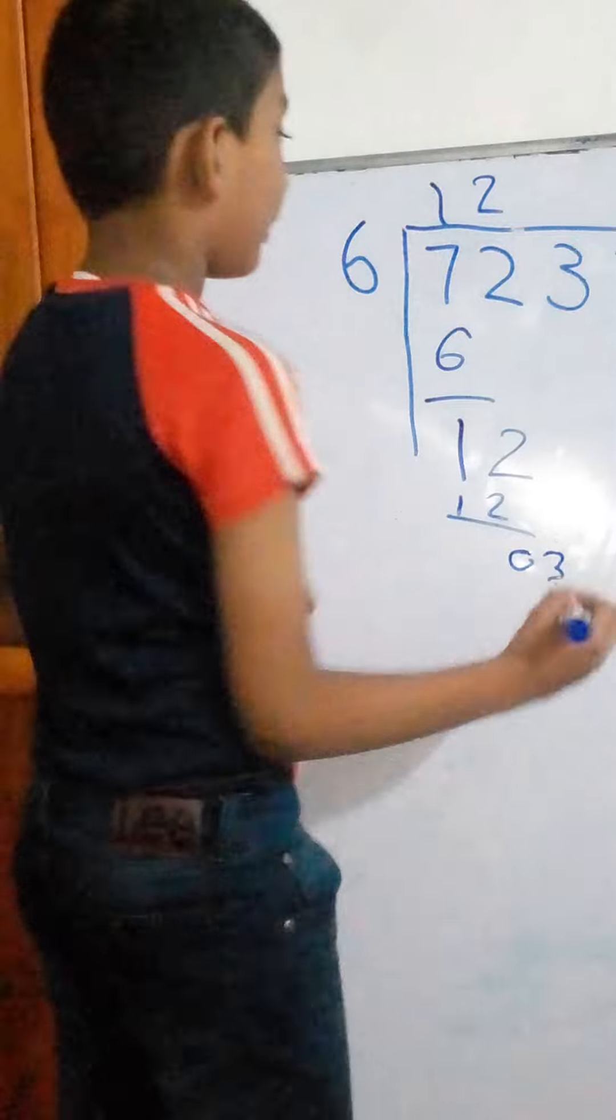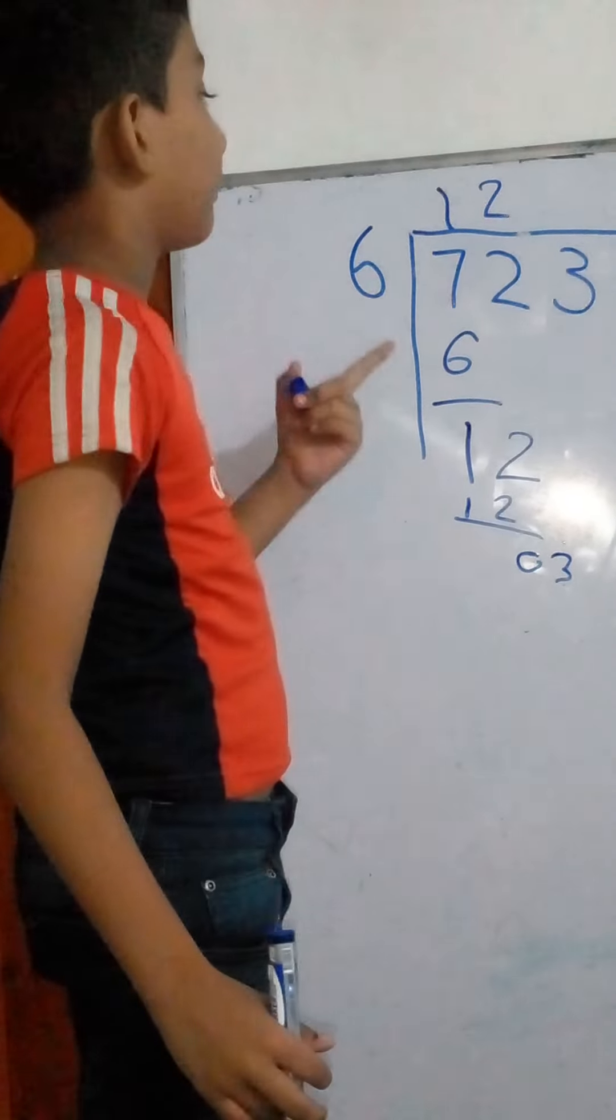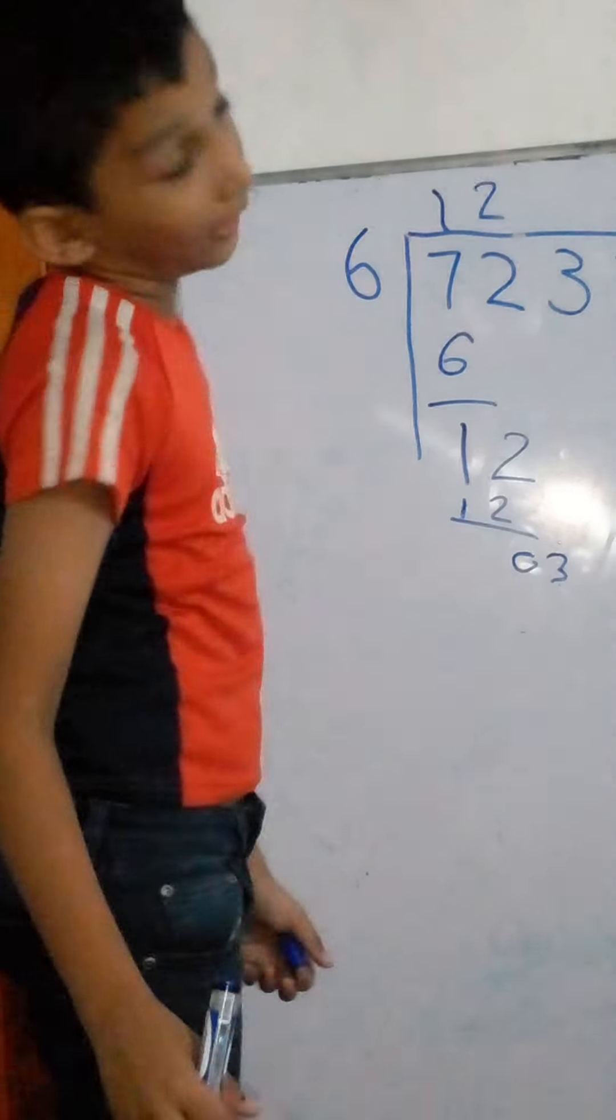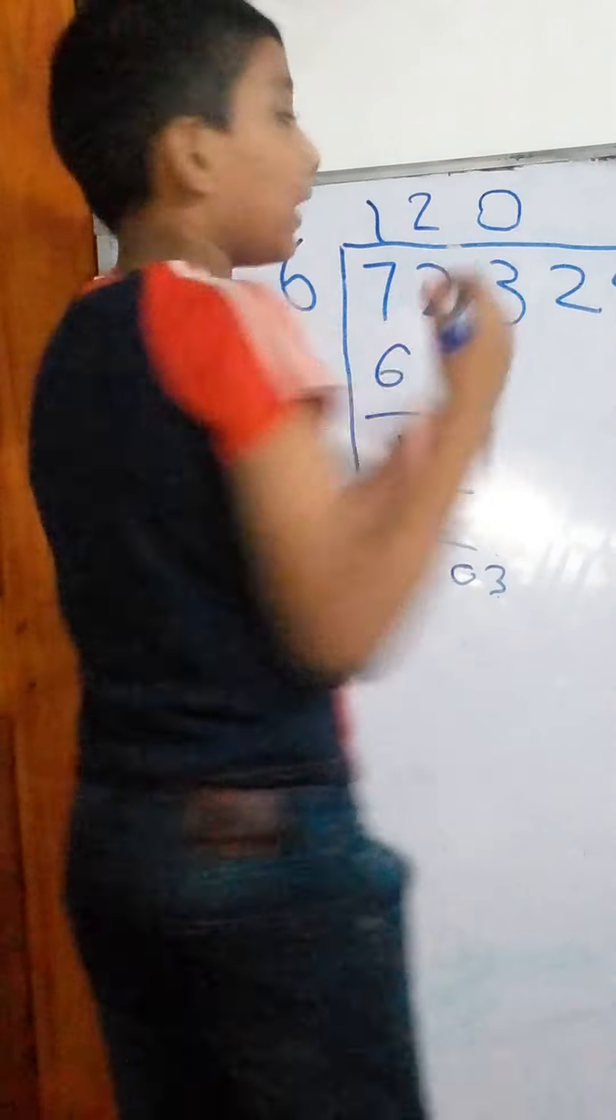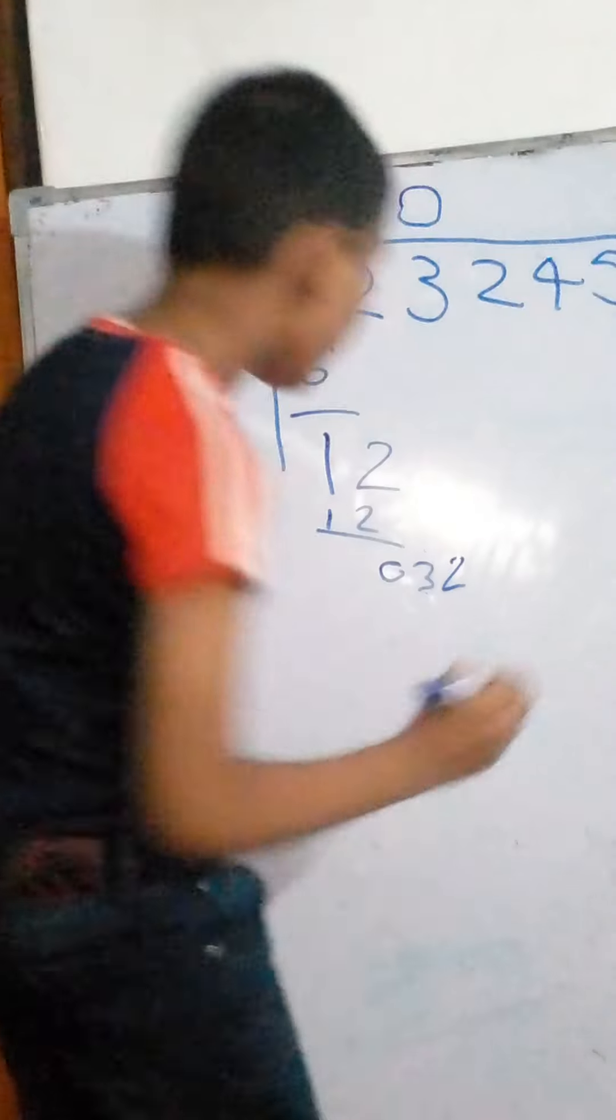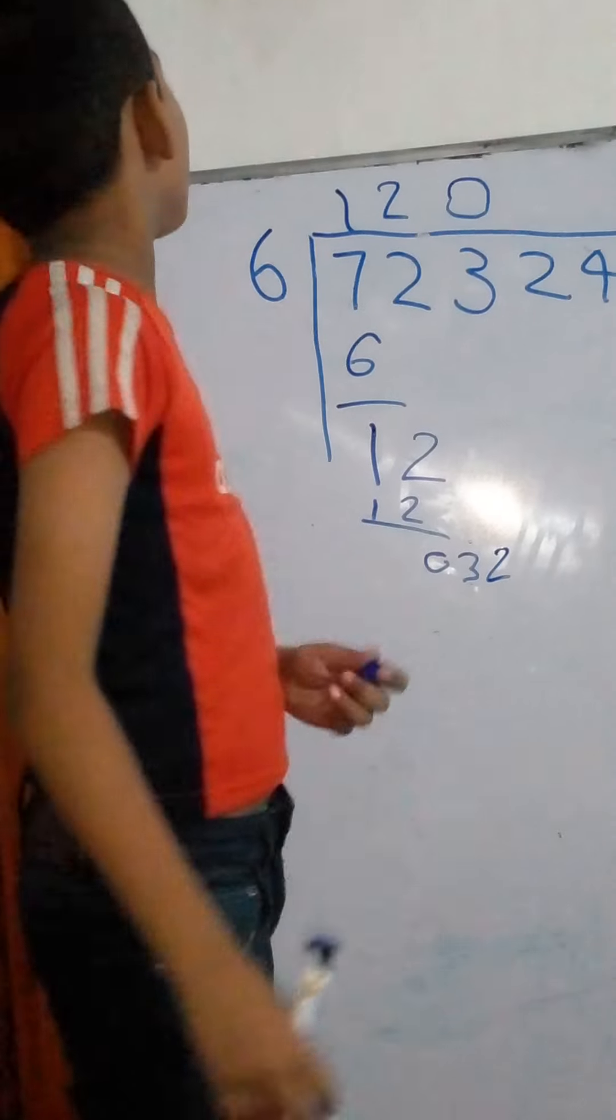Three is three. We can't divide three by six. That's why we need to put here zero. And we need to get these two here. And now this is thirty-two, thirty-two.